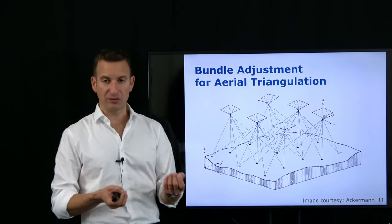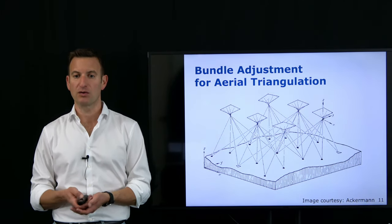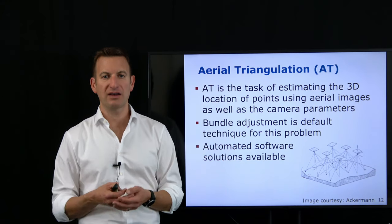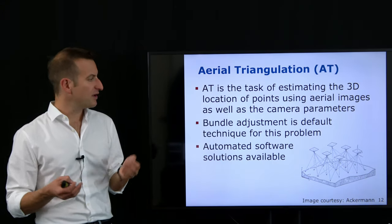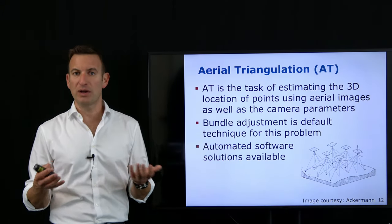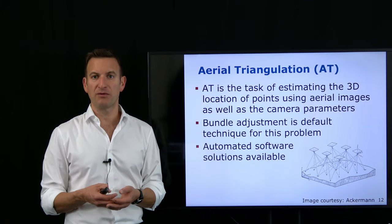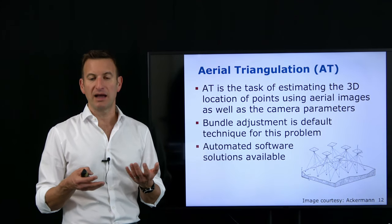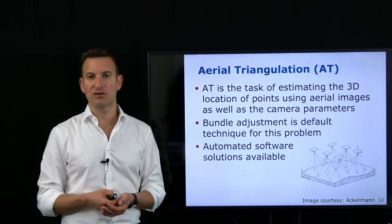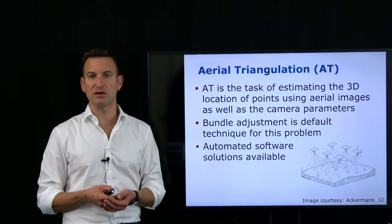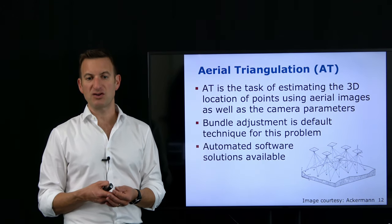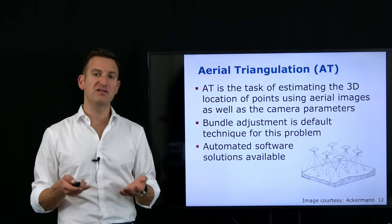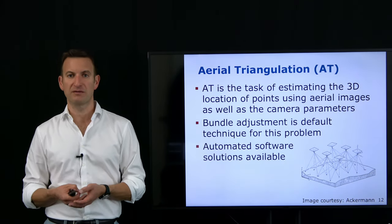Aerial triangulation is a common task and one of the standard tools when you want to build a map of the environment, for example using a UAV to collect image data. All the out-of-the-box software you may use to perform model estimation is basically performing bundle adjustment. It is the standard solution, and of course there are different flavors — you can exploit different assumptions, such as using GPS information from your UAV.